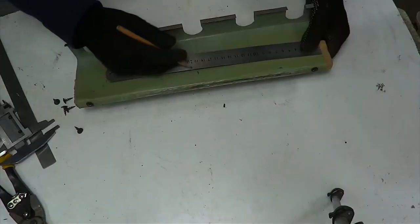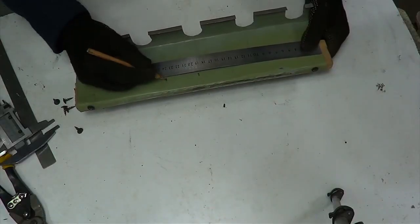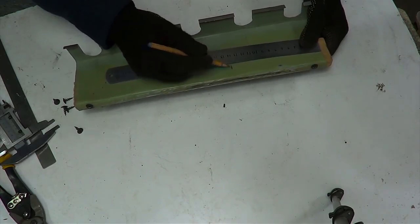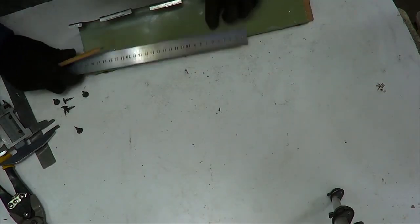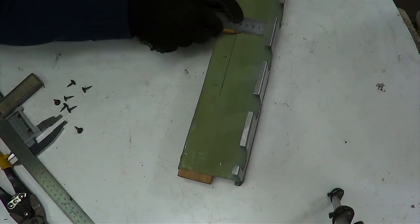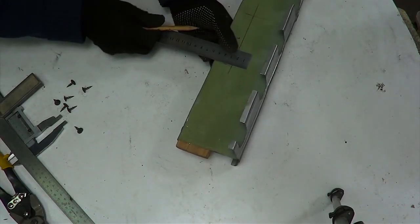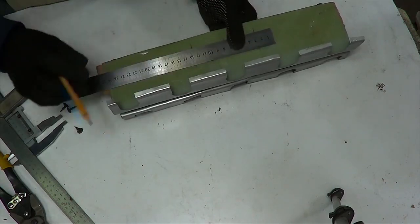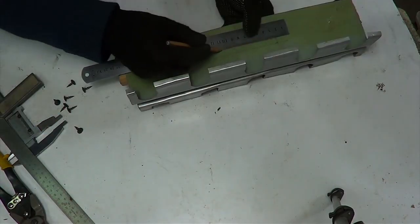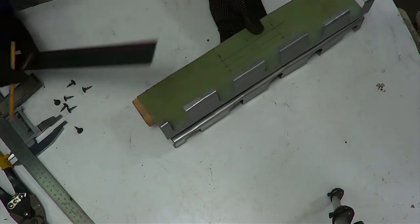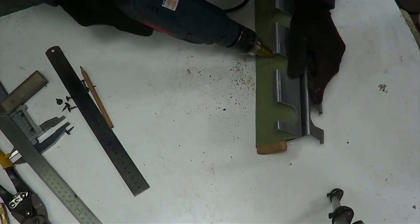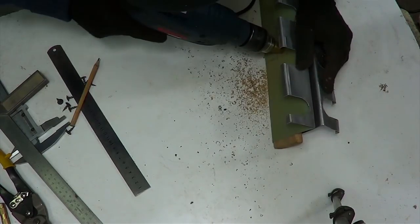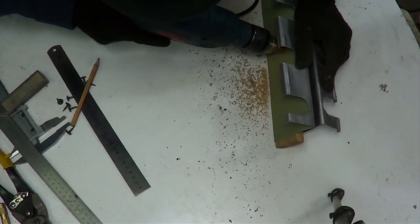Remove the workpiece from the vise and measure the center on the metal. From the center to the right and left we set aside 5 cm and mark. We drill two holes with a diameter of 2 cm with a center in our marks.